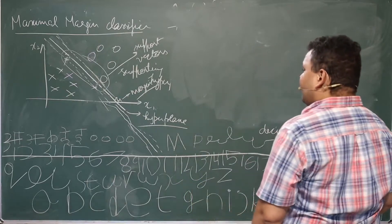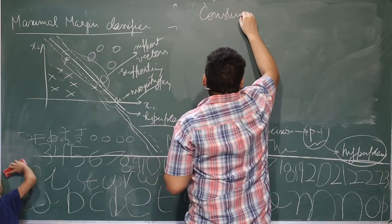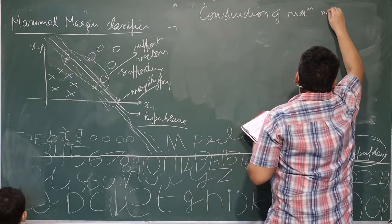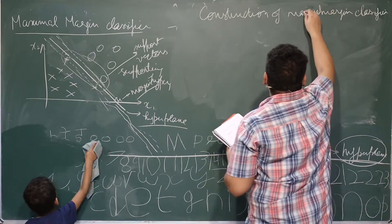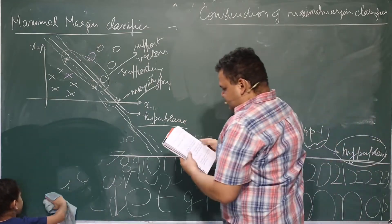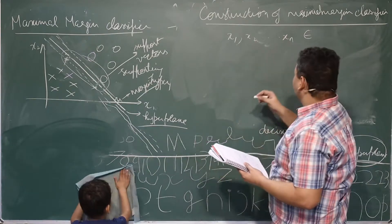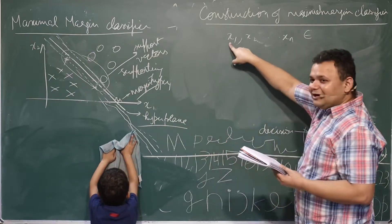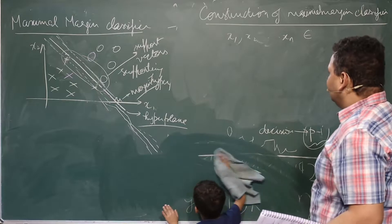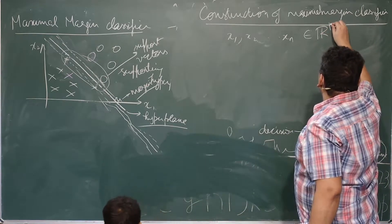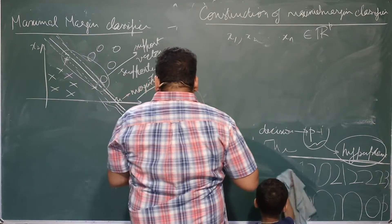Construction of maximal margin classifier — it's maximal, not maximum. If you have x₁, x₂, ..., xₙ, these are each of the observations. Each of these is a vector. How big a vector? Each xᵢ belongs to ℝᵖ — a p-dimensional real number.